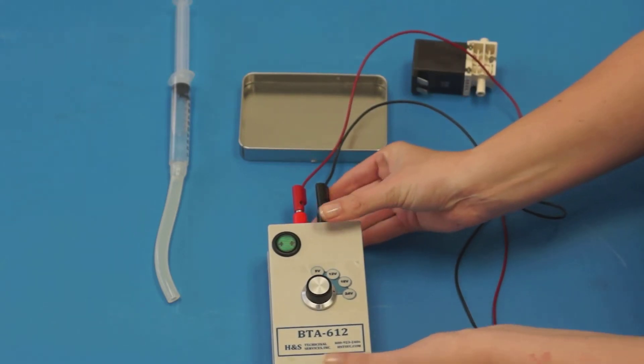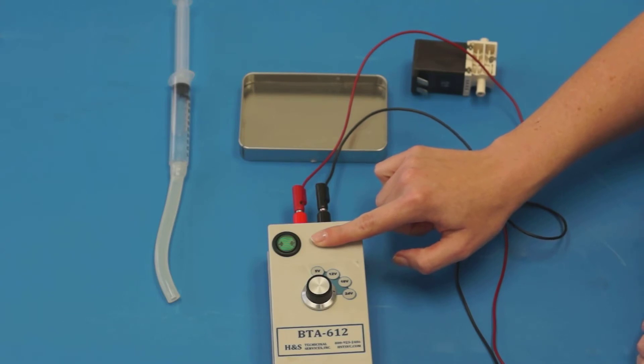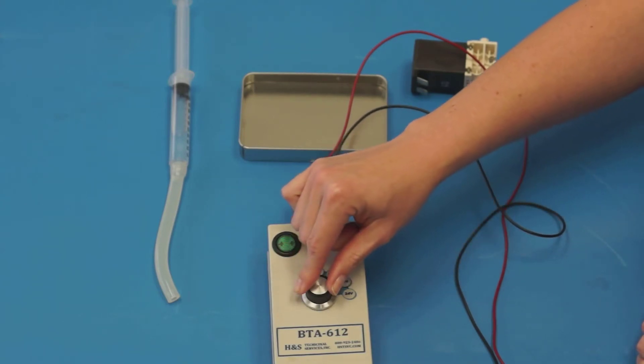To test a valve, ensure the tester is powered off. Set the rotary switch to the 24 volt position.